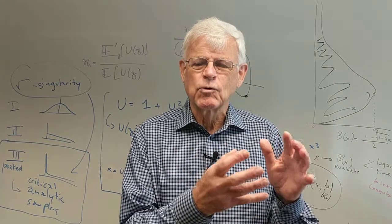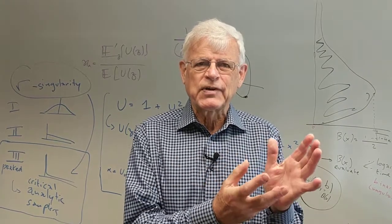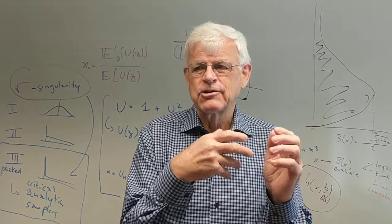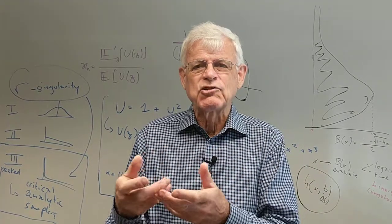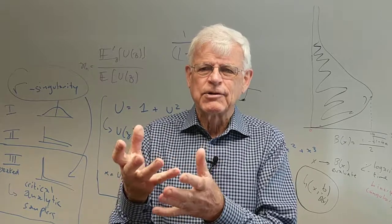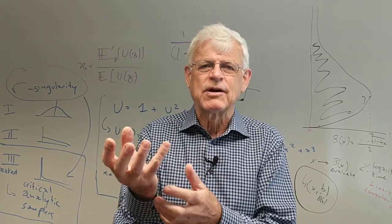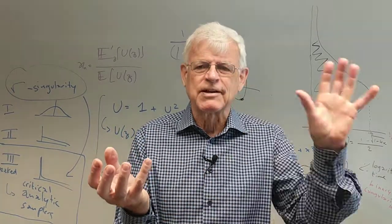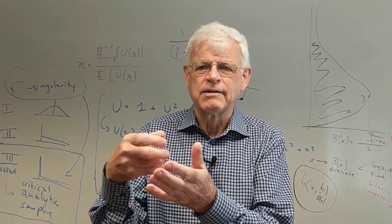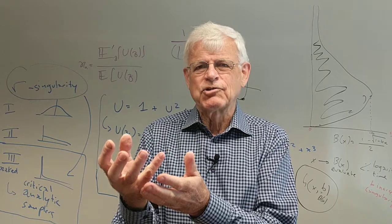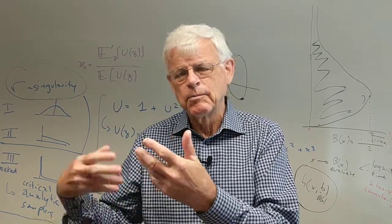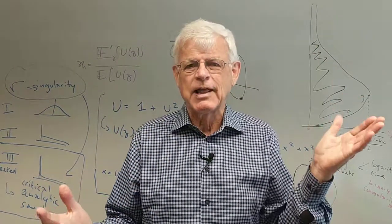What we do is take a formal specification of a combinatorial class and turn that automatically into an equation on the generating function. The generating function is a mathematical device that characterizes everything in the class. And then we have general theorems that, taking the generating function as a function in the complex plane, proves properties of the original class.